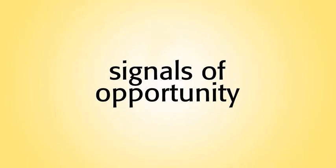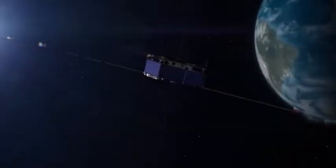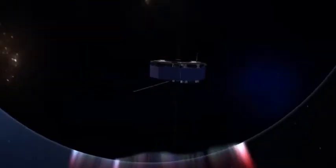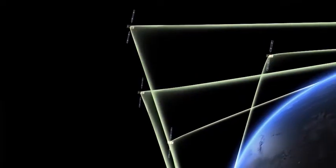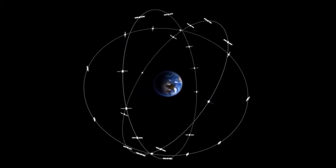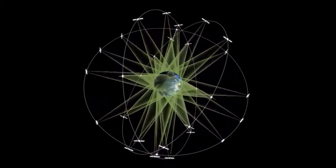These are called signals of opportunity. Examples are global navigation satellite systems such as the American GPS, the Russian GLONASS, or the upcoming European Galileo and Chinese Beidou systems.